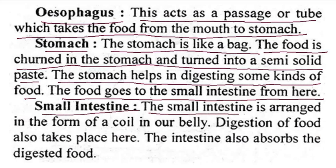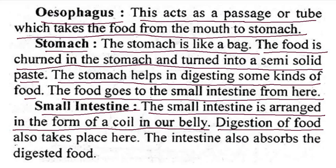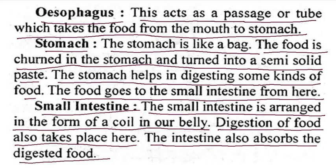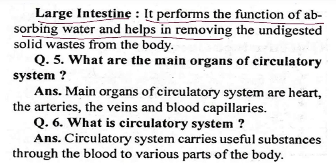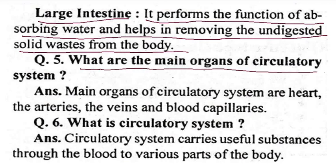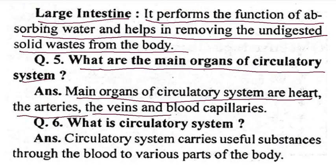The small intestine is arranged in the form of a coil in our belly. Digestion of food also takes place here, and the intestine absorbs the digested food. The large intestine performs the function of absorbing water and helps in removing the undigested waste from the body. What are the main organs of the circulatory system? The main organs are the heart, arteries, veins, and blood capillaries.